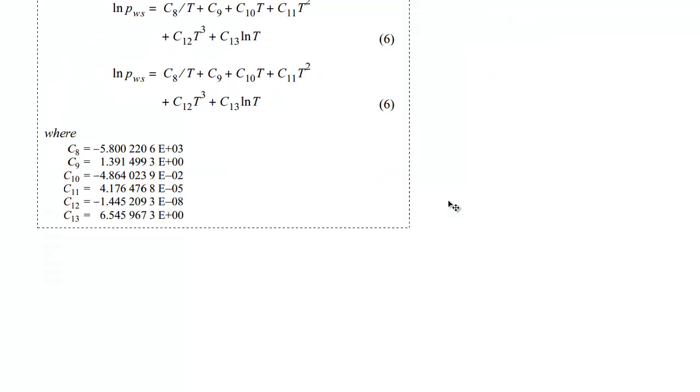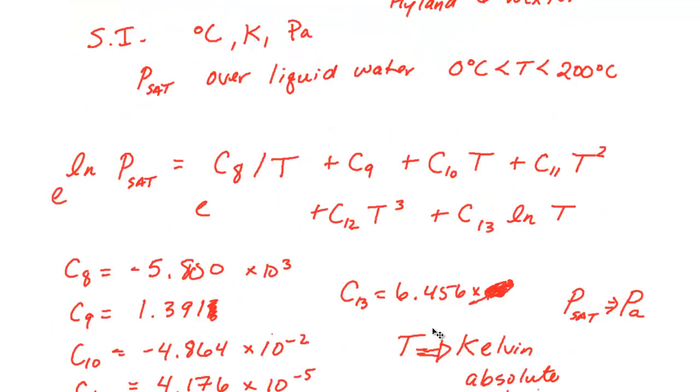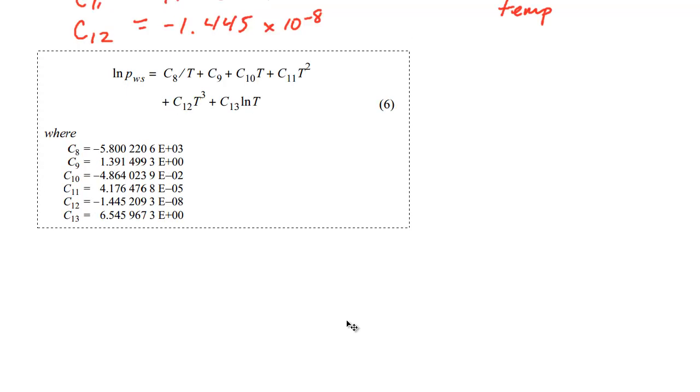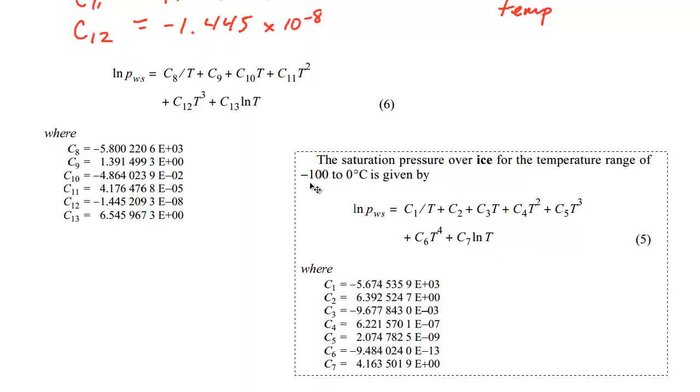Now if you have a condition where we are actually below 0 degrees C, and you have a situation where you're over a plane of ice, we have a different relationship with different coefficients. And so let me grab that, that is here, and this is from negative 100 to 0 degrees C, and we have this relationship with these coefficients.